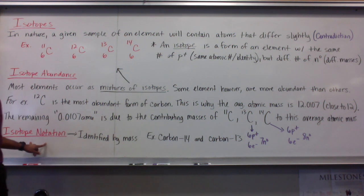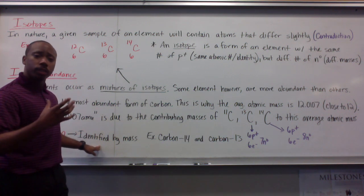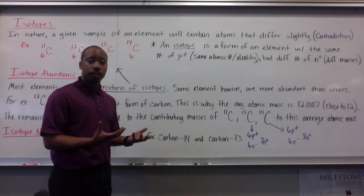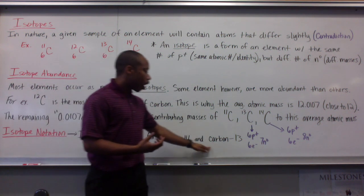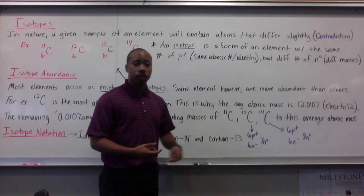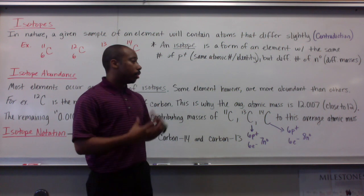We write isotopes in a specific way. So, isotopes are usually identified by their mass. For example, carbon 14. That's how you would write the isotope, carbon 14. Or carbon 13. It's just the name, dash, and the mass associated with that particular atom you're referring to.